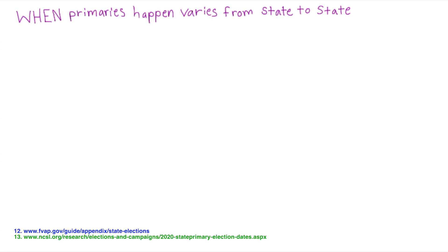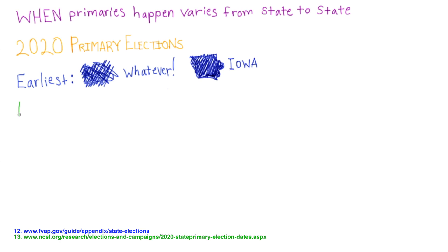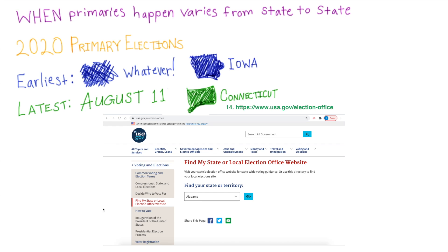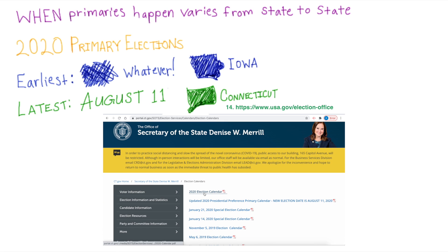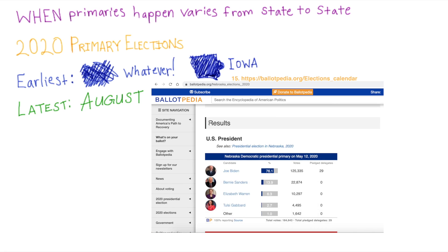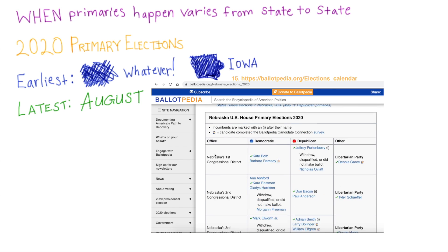Unfortunately, the exact date that primary elections happen also varies from state to state. In 2020, the earliest primary happened in February and the latest happened in August. You can go to usa.gov/election-office and choose your state, and it will take you to your state's election website where you should be able to find when your state's primaries are, along with other important info. You can also go to ballotpedia.org elections calendar, click on your state, and it has a lot of information about all kinds of elections, who is running and when.